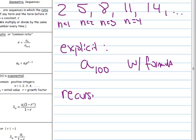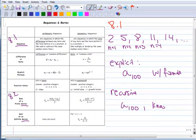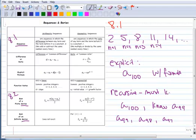Recursive means if I wanted to calculate the hundredth term, I have to know the term before, so I have to know the 99th term. And guess what? To know the 99th term, I would have to know the 98th term. And to know the 98th term, I would have to know the 97th. So in other words, a recursive formula means you have to know previous terms. Must know previous terms.